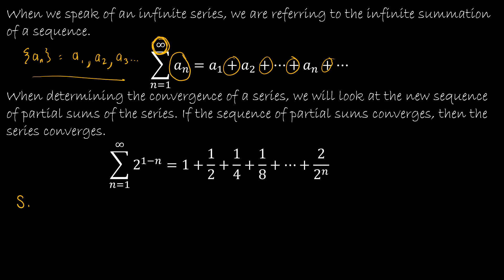Partial sum, which we denote with a capital S, is the sum of the first n values of a sequence. So here's my function, my sequence is 2 to the 1 minus n. So my sequence would be 1, 1 half, 1 fourth, etc. I want to find whether or not this series will converge.